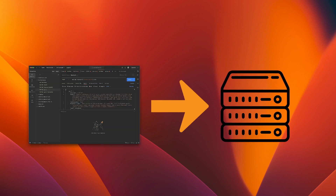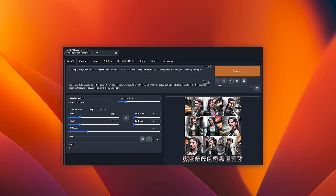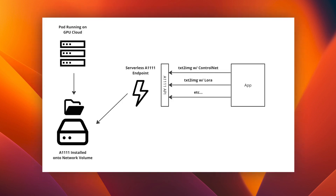What happens when you want to change the configuration? No problem. Just restart the Stable Diffusion pod and make your changes in A1111. We'll strategically utilize RunPod technologies to create a network drive, install and configure Stable Diffusion on it, and then establish a serverless API pointing towards the Stable Diffusion installation.